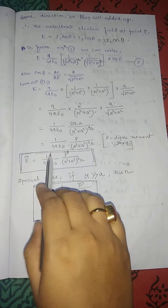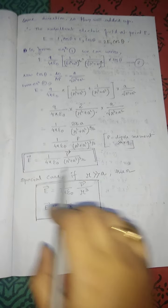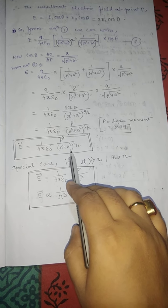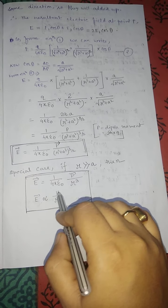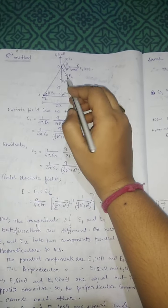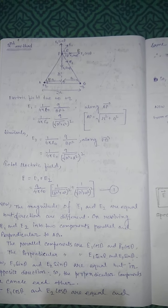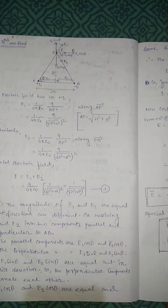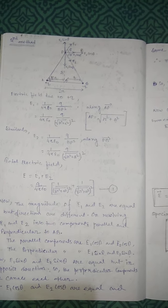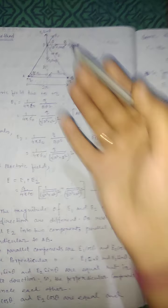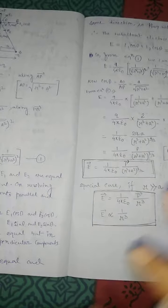In vector form: E⃗ = (1/4πε₀) × p⃗ / (r² + a²)^(3/2). For the special case where r >> a, we neglect a² and get E ∝ 1/r³. In the first method we used y as the distance (due to the coordinate axis setup), while in the second method we use r — both represent the same equatorial distance.